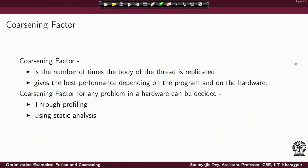We were trying to define the notion of coarsening factor. Essentially, by factor I mean how much work I am going to allocate per thread over and above a baseline implementation. A coarsening factor is the number of times I am going to replicate the body of a thread — the number of times I am increasing the per-thread activity with respect to our baseline implementation. What is interesting is figuring out the coarsening factor that gives the best performance, depending on the program and on the hardware. It is not something constant — it is very much a function of what program is under consideration and what is the target GPU.